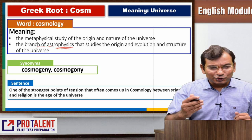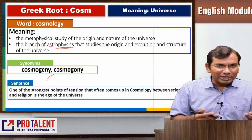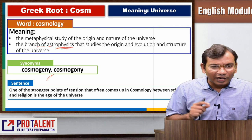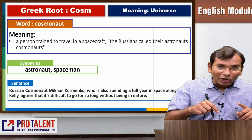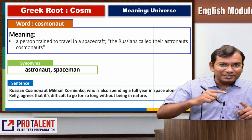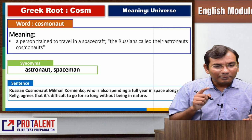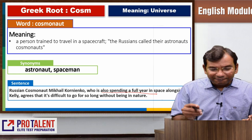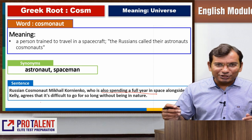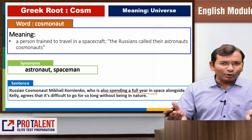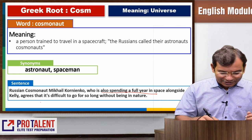Cosmo refers to universe. The other root words are cosmogeny and cosmogony — these relate to the origin of the cosmos. Cosmonaut is an astronaut or spaceman, someone who travels in space. Mikhail Kornienko, who spent a full year in space alongside Kelly, agrees that it is difficult to go long without being in nature — this is what a Russian cosmonaut talks about. Please tell us in the comments section: who was the first cosmonaut?